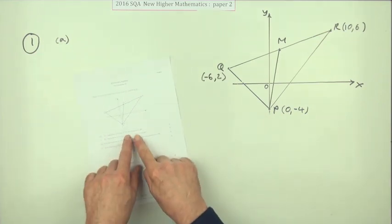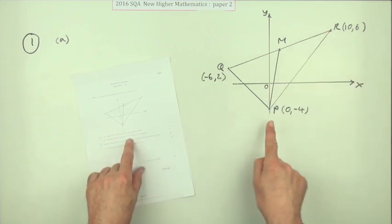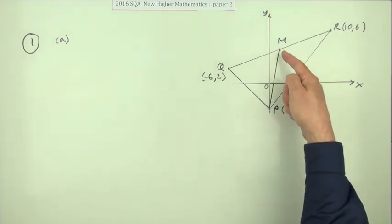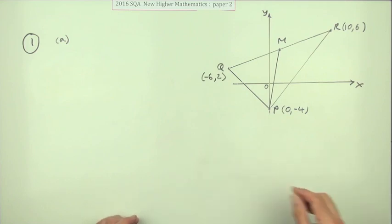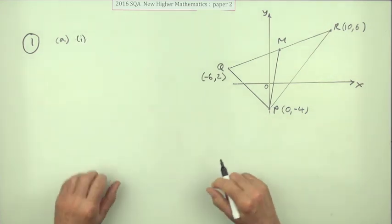Part A: State the coordinates of M, the midpoint of QR, hence find the equation of PM, the median through P. Well, if it just said what's the equation of the median through P, you would have known to find M anyway, so it's leading you by the hand a wee bit here, maybe just to help you into the paper.